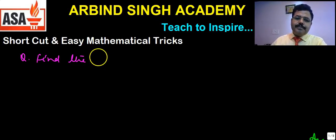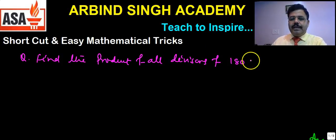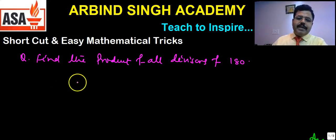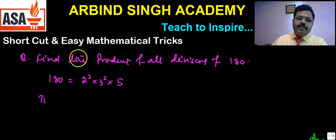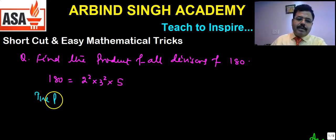We need to find the product of all divisors of a number, say 180. We've already learned that 180 can be written as 2² × 3² × 5. The product of all divisors can be obtained using a formula.